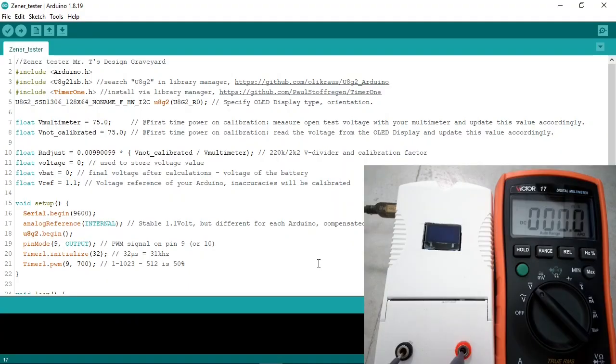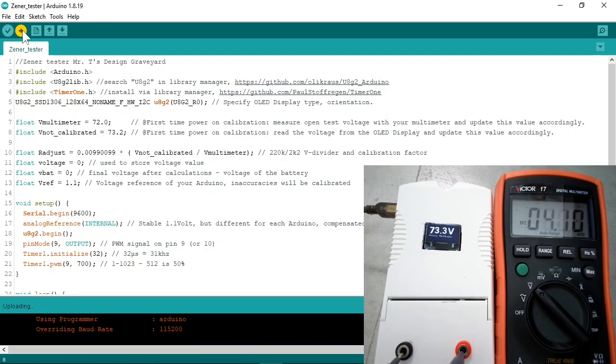To make the Arduino voltage readings accurate, you need to do a one-time calibration. Here you see the Arduino code, the Zener tester and my multimeter connected to the output. I now power up the Zener tester. You see in the code, it still has the default values of 75V. The multimeter reads 72V. Let me enter that. 72.0V and the OLED display shows 73.2V. 73.2V. Now I upload the code with the new values. And you see the reading of the OLED is now 72V, the same as the multimeter.